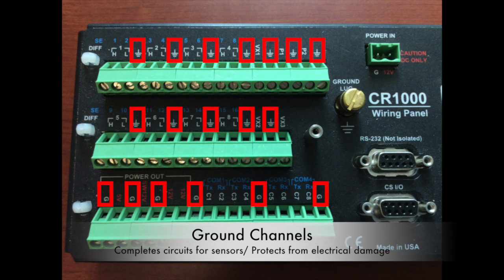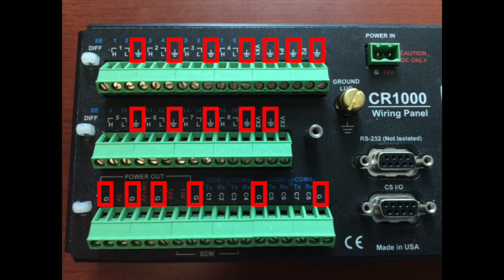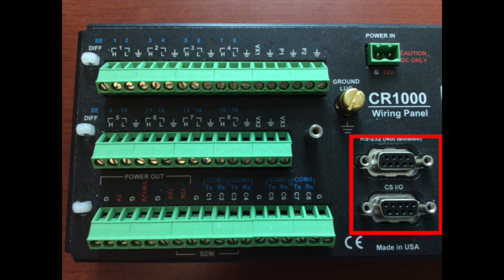Finally, we have ground channels, noted in between the analog channels by a symbol that looks like an inverted Christmas tree, or the letter G on the bottom row for digital grounds. All sensors need ground channels, so when you wire things in, make sure the right cables go into ground channels. The RS-232 and CSIO ports are how the data logger communicates back to us in Raleigh, or how you can check on-site that the values coming in are legitimate and make sense for the parameters being measured.